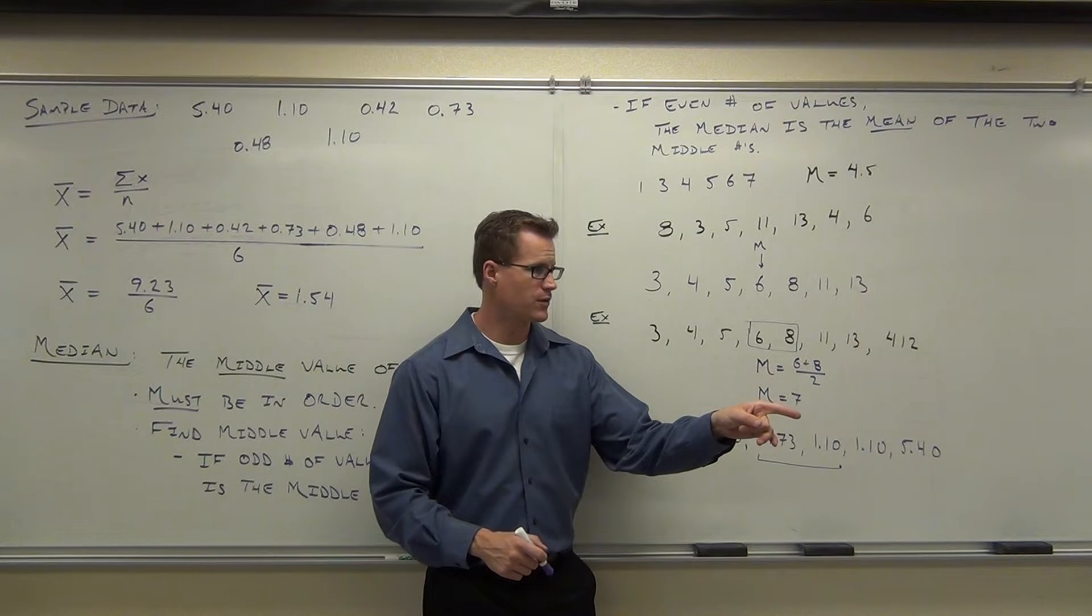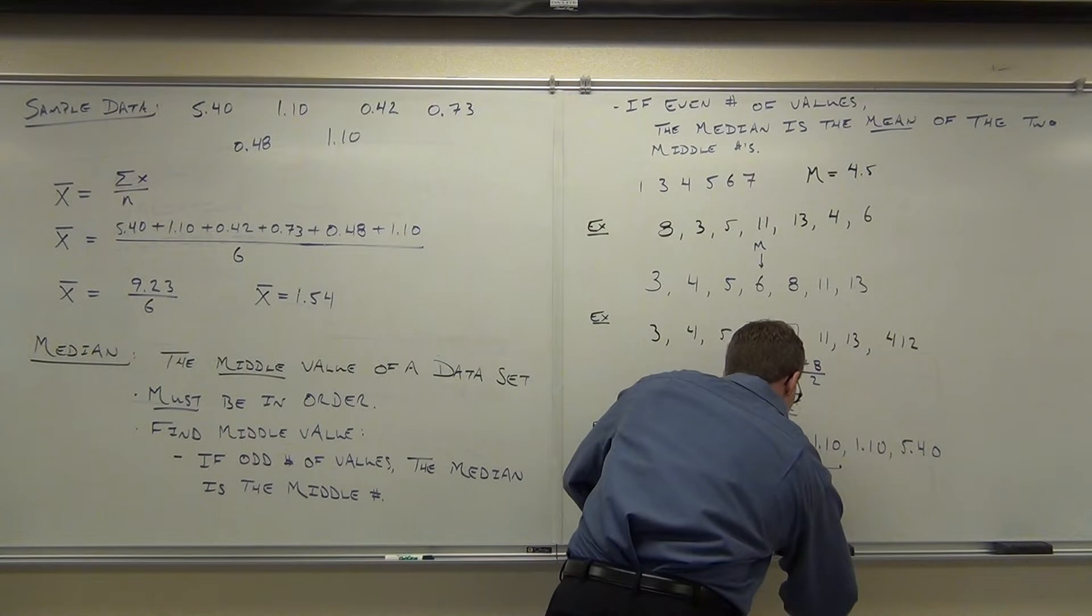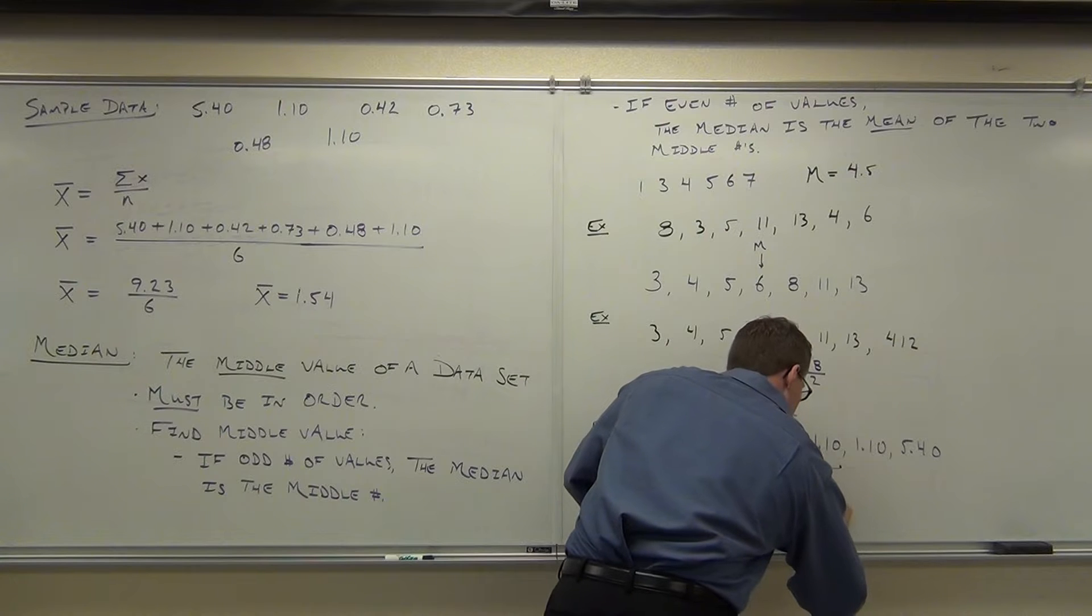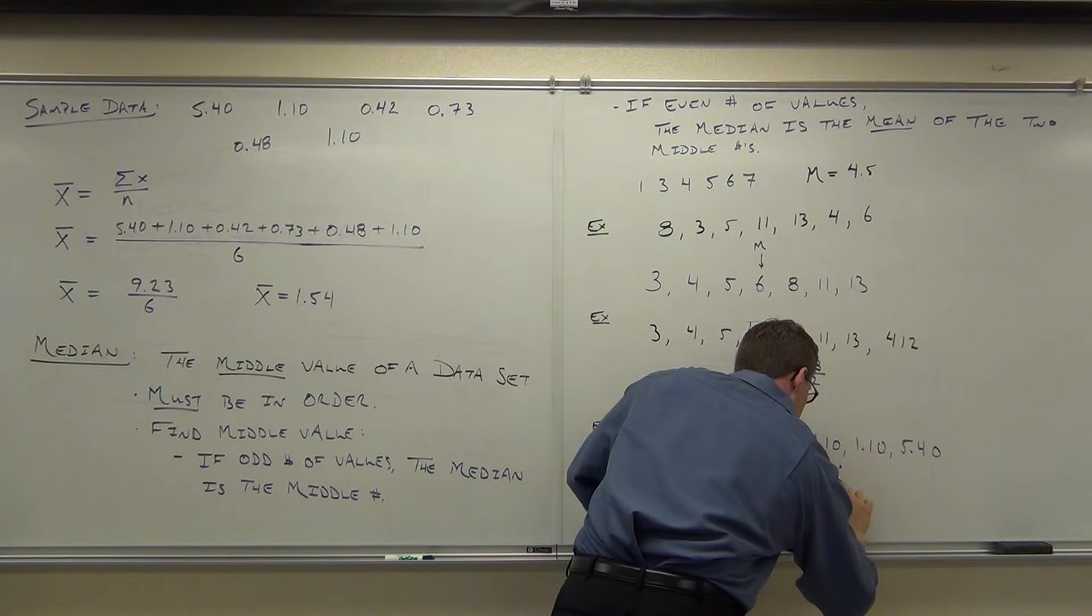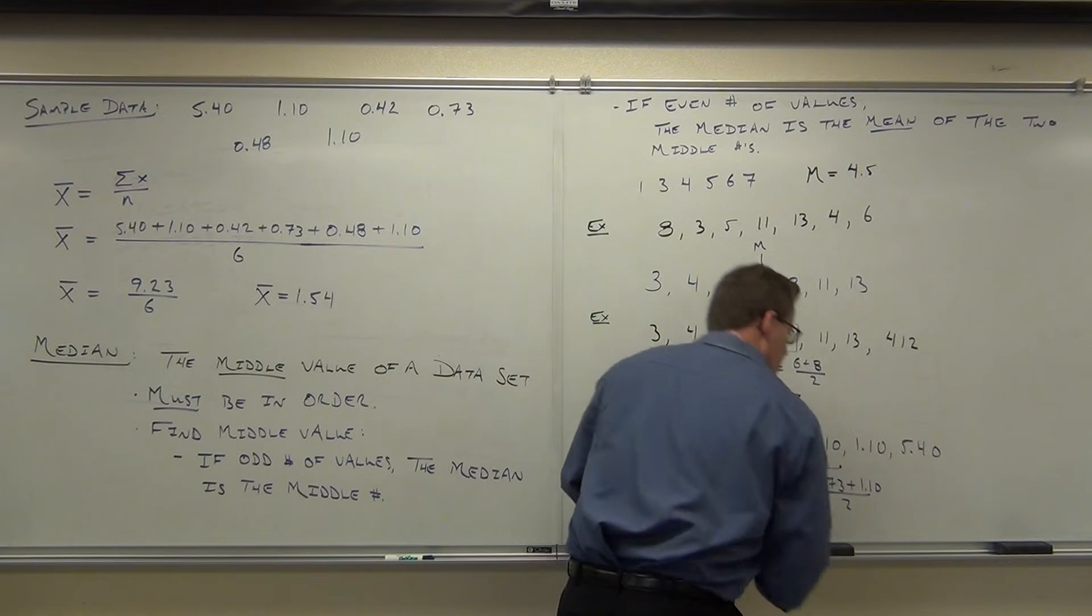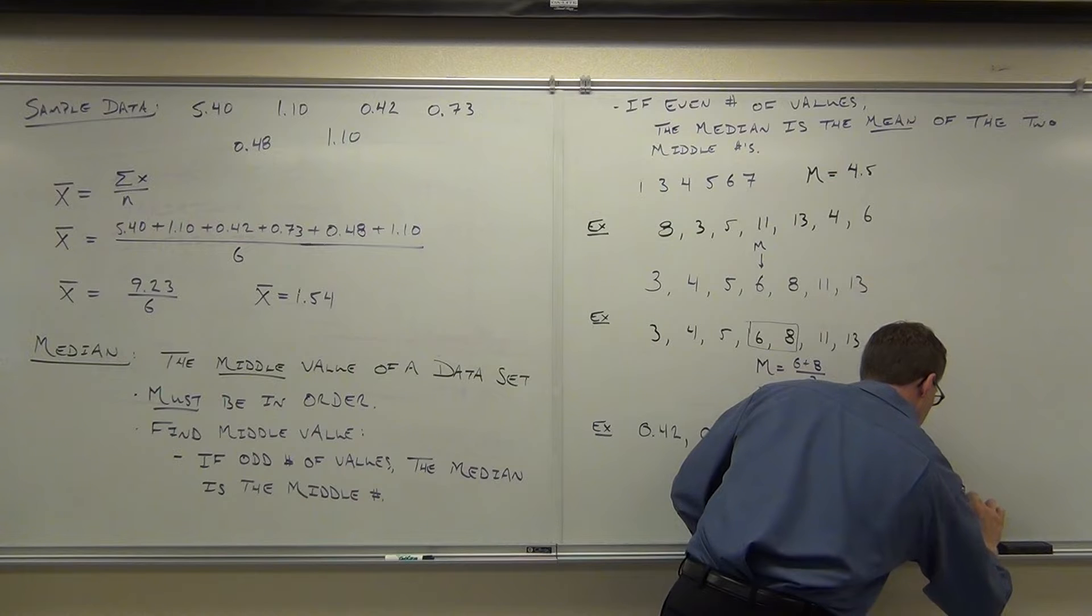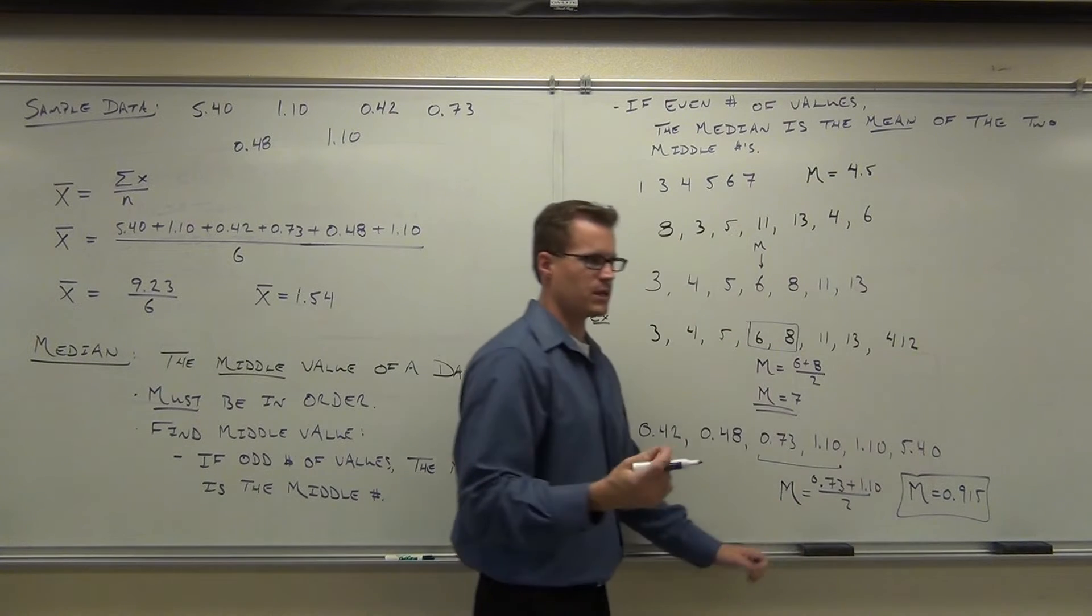What's the median for this range of data? 0.915. Did anybody else get 0.915? Yeah. So we add them together, divide by 2, and we get 0.915. Perfect. That's our median.